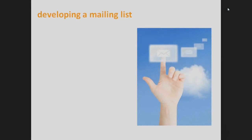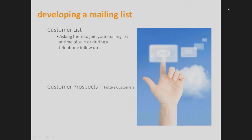The next thing is developing a mailing list, which is critical to email marketing just like any kind of marketing. You have to have a customer data list to distribute promotions to. How do you develop a customer list and a prospect list for email marketing? Starting with a customer list — if you already have an existing customer base, ask them at the time of sale if they'd like to join your mailing list. Make it valuable for them to join through promotions.